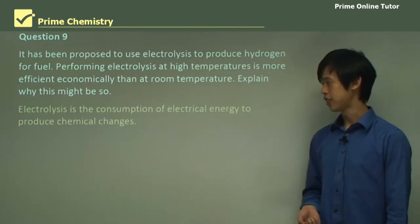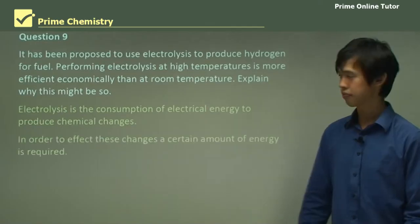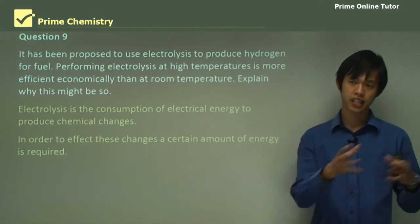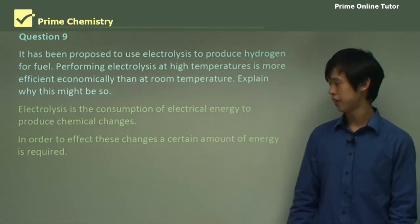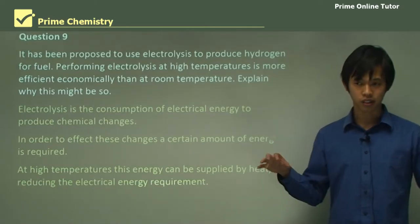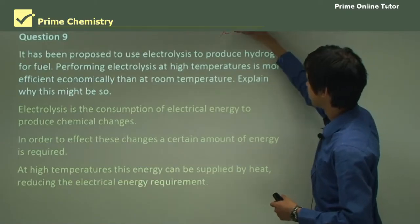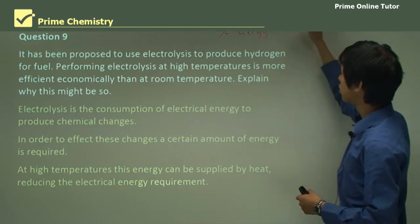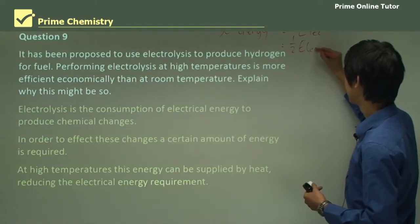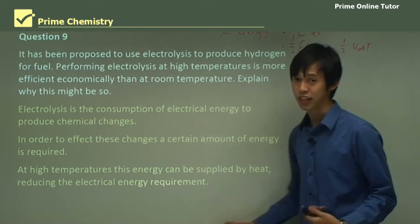Electrolysis is the consumption of electrical energy to produce chemical changes. We're consuming electrical energy to essentially produce chemical energy. In order to effect these changes, a certain amount of energy is needed. We need a certain amount of energy to get this reaction to happen. At high temperatures, this energy can be supplied by heat, so we can reduce the amount of electrical energy that we need. We could get all of that x from electricity, or we could get maybe half electricity plus half heat. We could get some electricity, some heat, and so we can reduce the amount of electricity that we actually use.